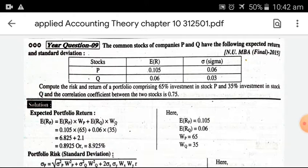Okay guys, sorry for being late. This is applied accounting theory, chapter on portfolio. The common stock of companies P and Q have the following expected return and standard deviation. Expected return and standard deviation, there is sigma for standard deviation.